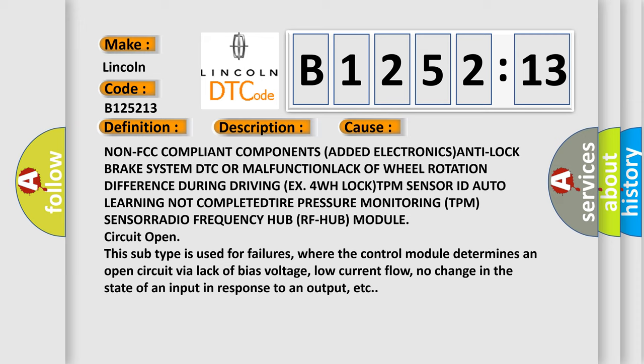Non-FCC compliant components added. Anti-lock brake system DTC malfunction, lack of wheel rotation difference during driving, TPM sensor ID auto learning not complete, tire pressure monitoring sensor or radio frequency hub RF module circuit open. This subtype is used for failures where the control module determines an open circuit by a lack of bias voltage, low current flow, no change in the state of an input in response to an output, etc.